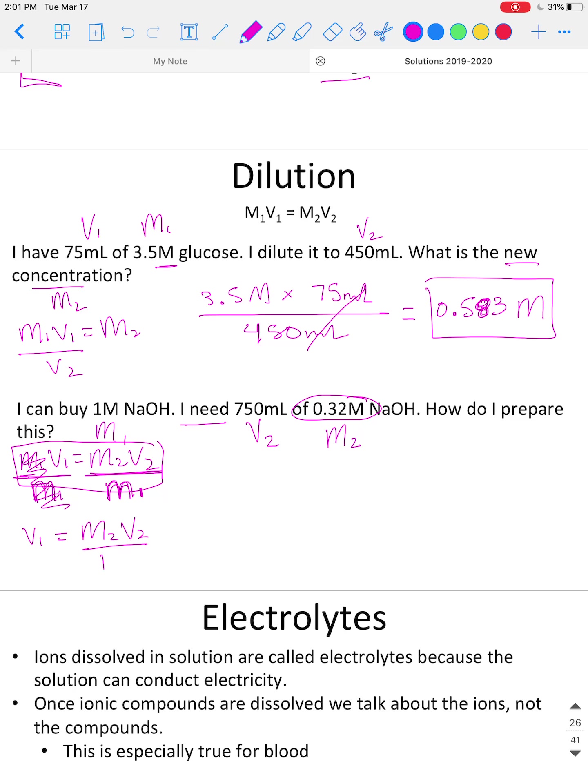Now we just plug everything in. V1 equals plug in M2, 0.32 molar, times V2, 750 milliliters, divide that by M1, which is 1 molar. So 0.32 times 750 equals 240. What are my units? Well, it's a volume here, and in my problem I have units of milliliters, so my answer I'm going to have those same units. So that is V1.